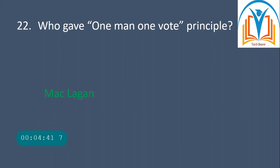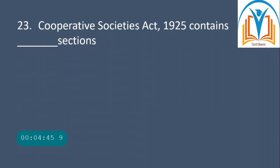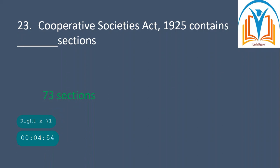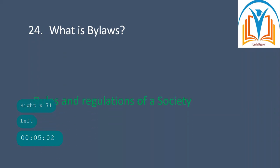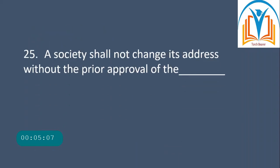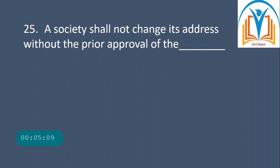Question number 22: who gave the 'one man one vote' principle? MacLagan was the man who gave that principle. Next question: the Cooperative Societies Act 1925 contains how many sections? It contains 73 sections. Next question: what are bylaws? Rules and regulations of a society are called bylaws.